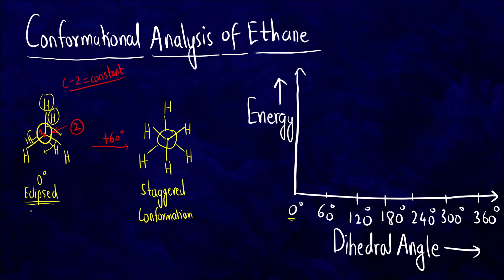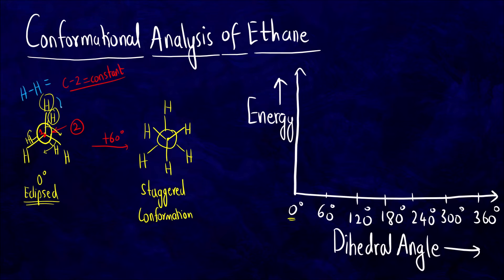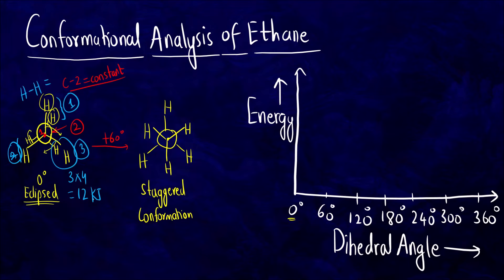In the eclipsed conformation, what is the strain energy? For H-H eclipsing, the energy is 4 kJ per interaction. There are 3 H-H eclipsing interactions, so 3 × 4 = 12 kJ/mol is the strain energy at 0 degrees.